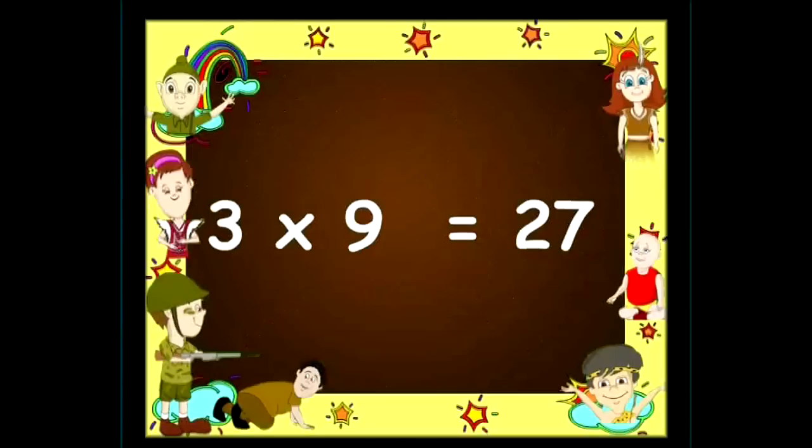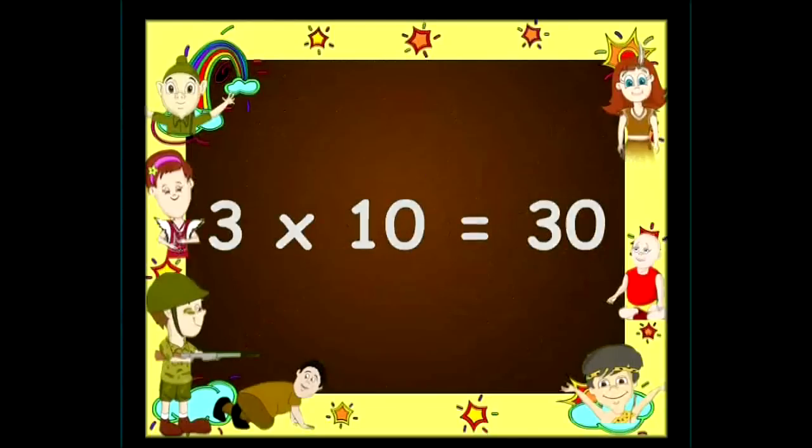Three nines are twenty-seven, three tens are thirty, three elevens are thirty-three, and three twelves are thirty-six.